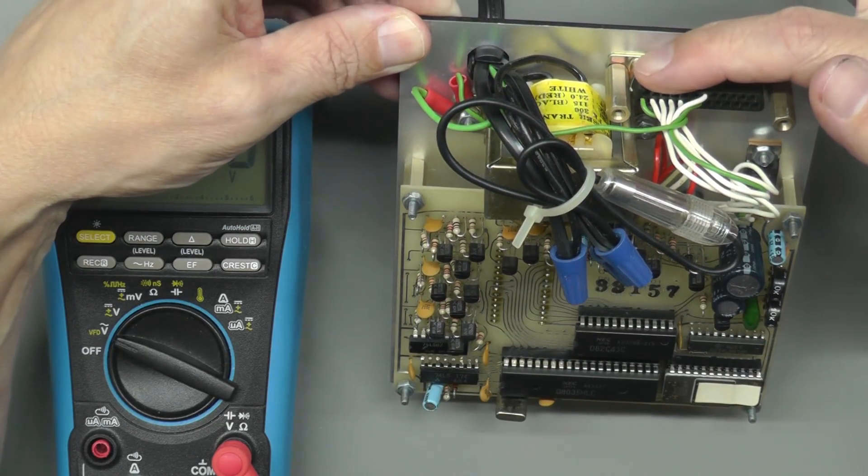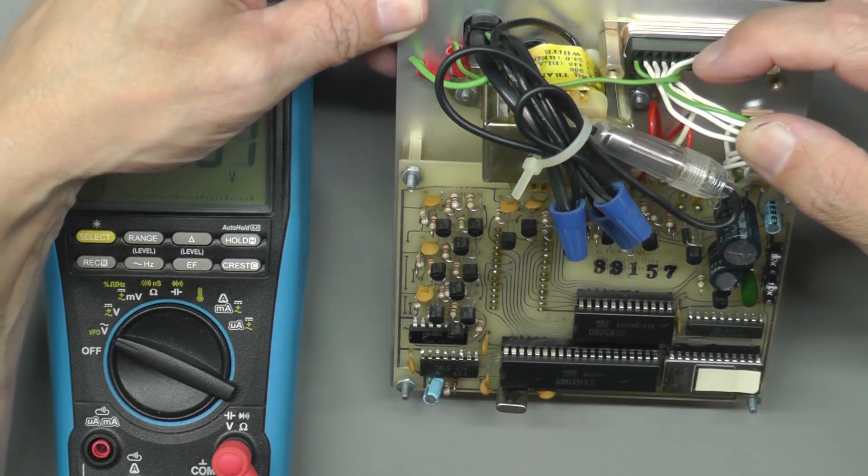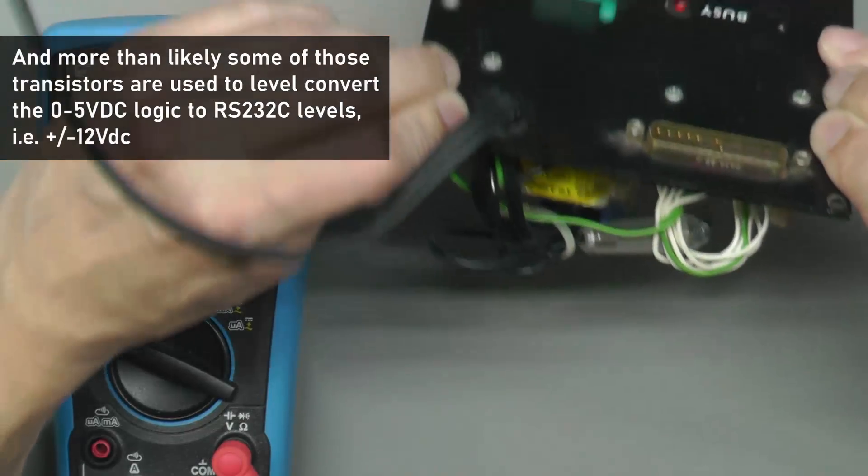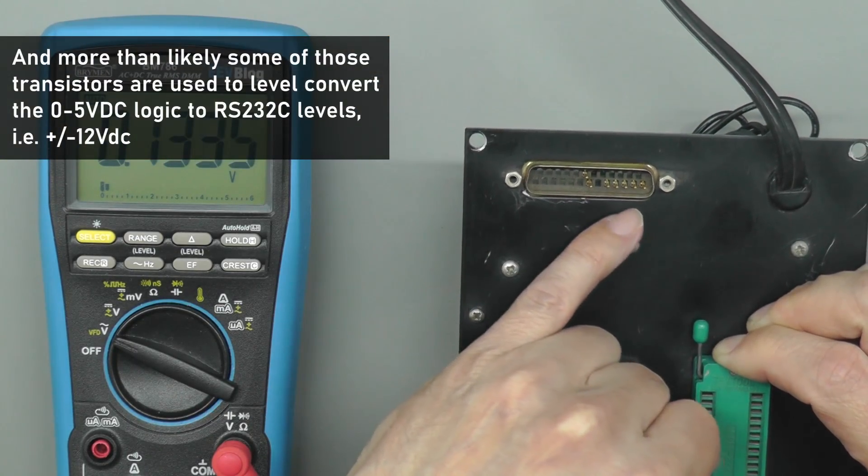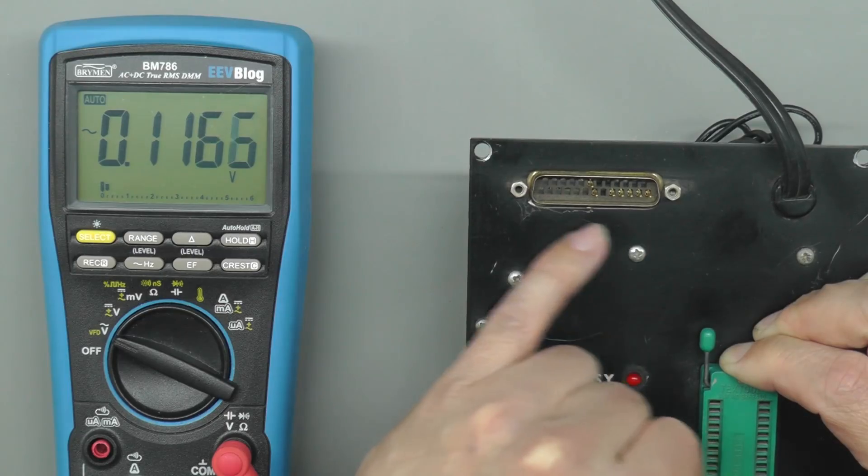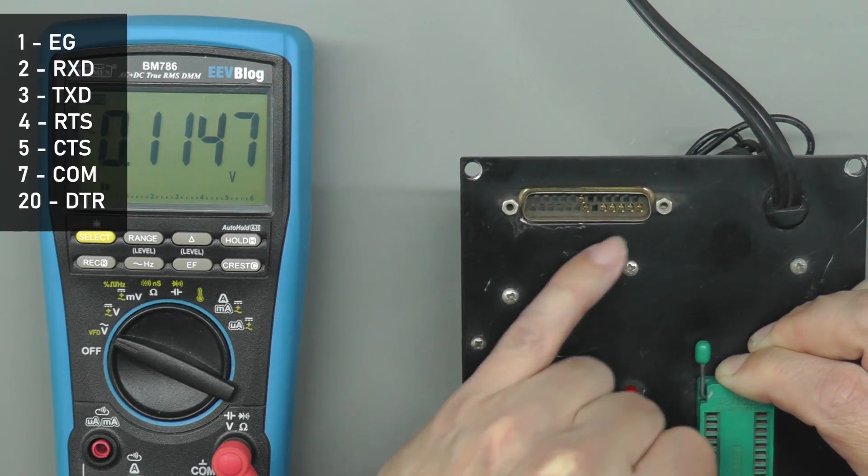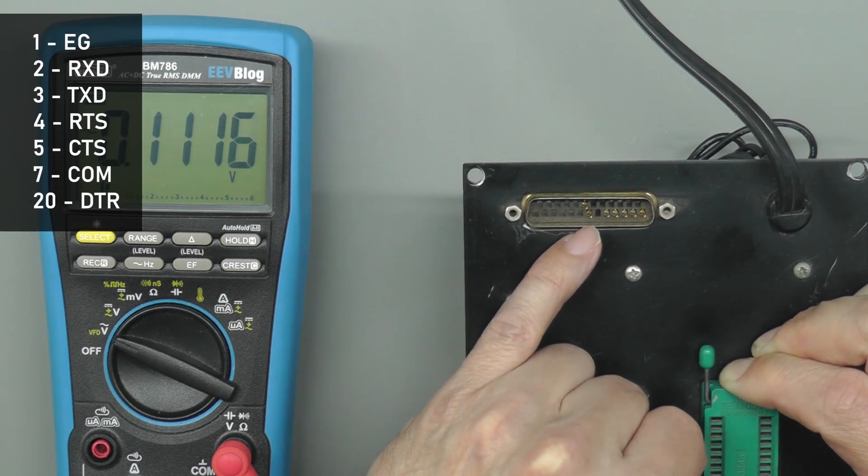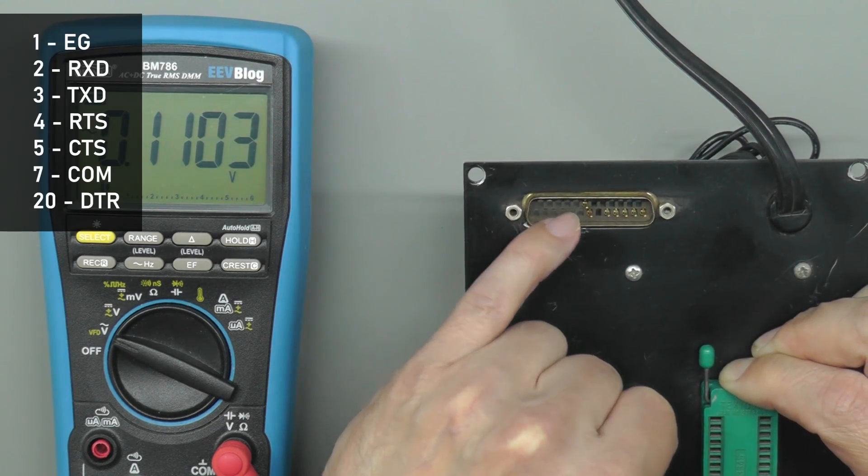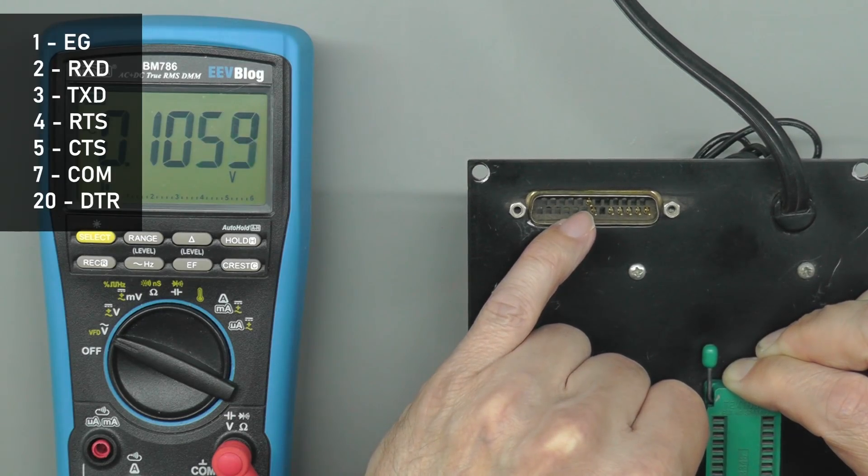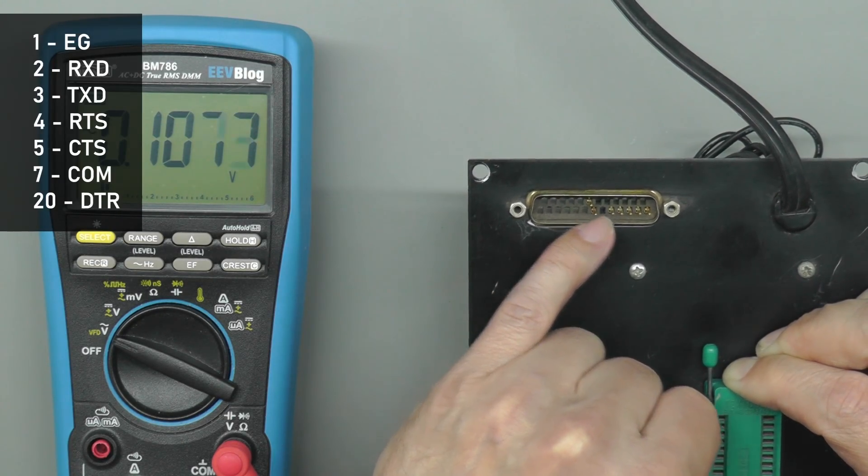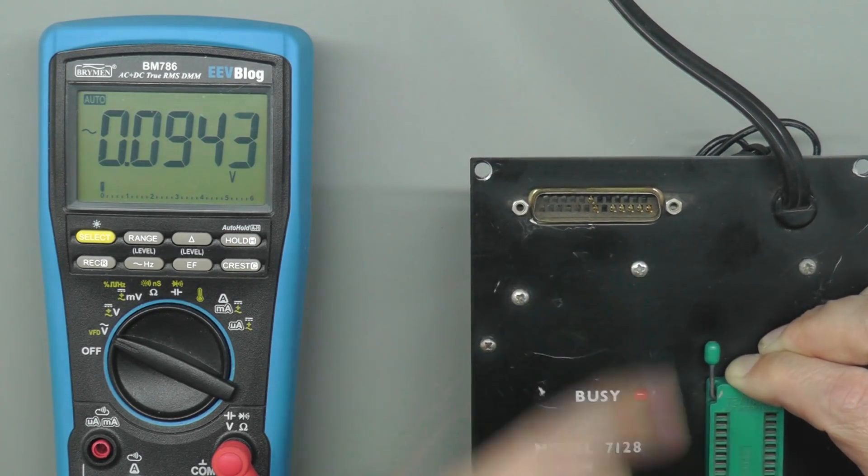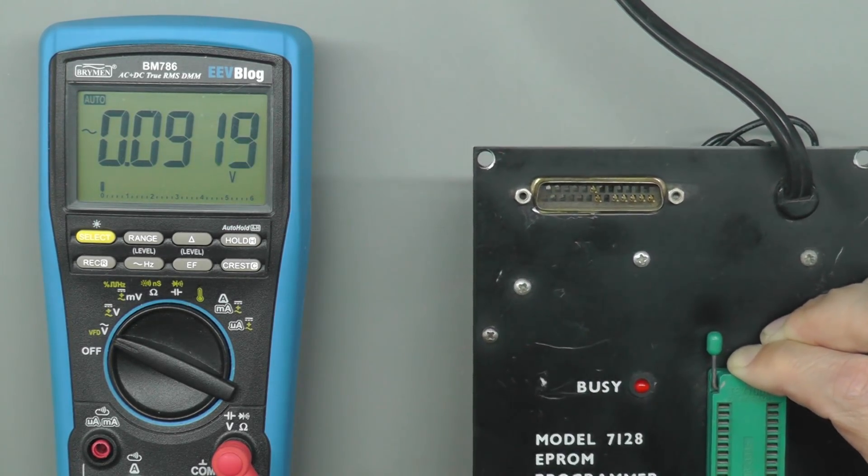The other thing we've got is a 25-way D-type connector here which is interfaced down onto the PCB. As you'll notice, not all the pins are interfaced there because this is just a serial protocol that's being used on this D-type and it looks like a standard pin configuration. You've got pins 2 and 3 are normally RX and TX. You've got pin 7 was ground if I remember, and way off on its own there was pin 20, and that was something like DTR. So we'll need to make up a cable for that. Luckily the manual does have the wiring.